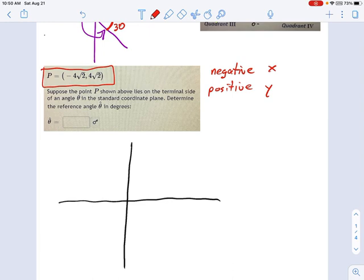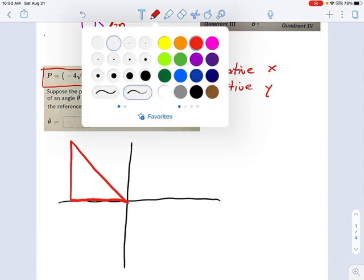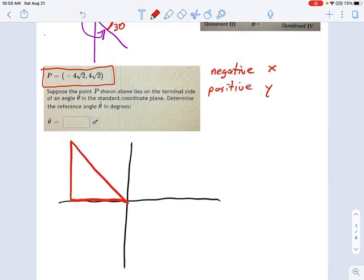Negative x, positive y. That's going to look like this. There's my negative x. And positive y is going up this way. So here's a triangle in quadrant 2. And the point that we're told, P, is going to be right here. So that's -4√2, 4√2. So there's my point.